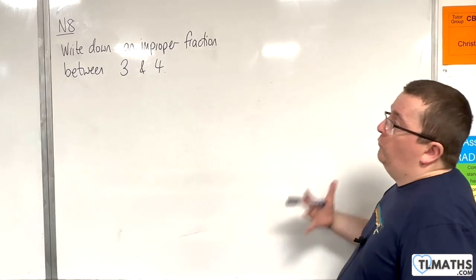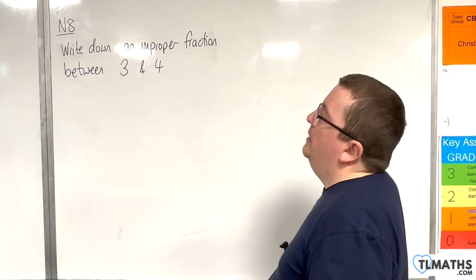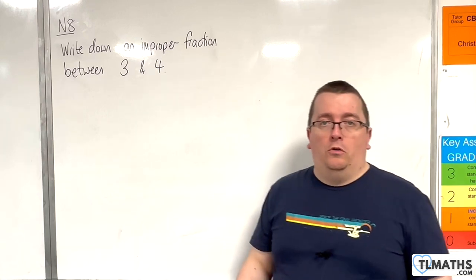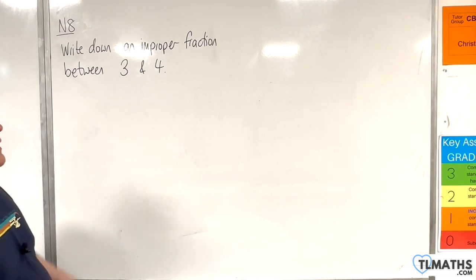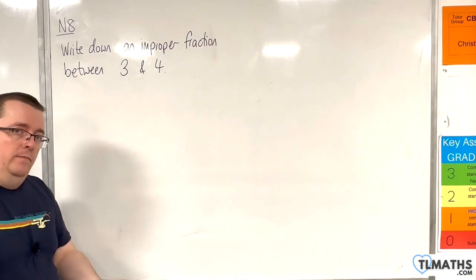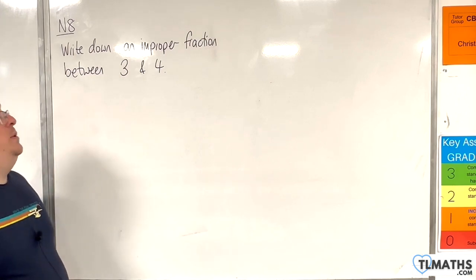In this video, we're going to look at this problem where we have to write down an improper fraction between 3 and 4. What I suggest is that you choose a mixed number that is between 3 and 4, and then we can convert it into an improper fraction.